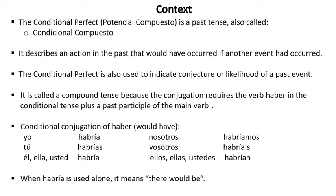The Conditional Perfect Tense, which in Spanish is referred to as potencial compuesto, is a past tense — also called conditional compuesto. It describes an action in the past that would have occurred if another event had occurred. It is also used to indicate conjecture or likelihood of a past event. It is called a compound tense because the conjugation requires the verb haber in a conditional tense plus a past participle of the main verb.